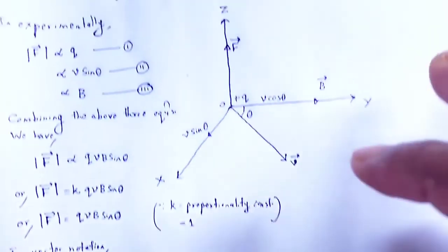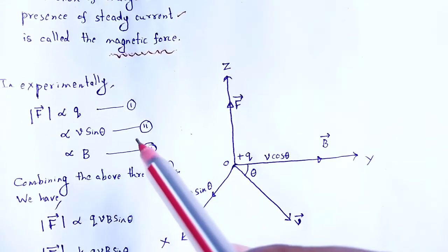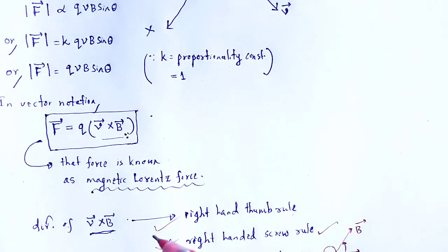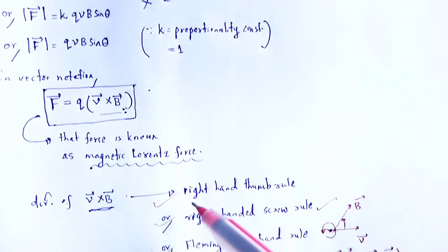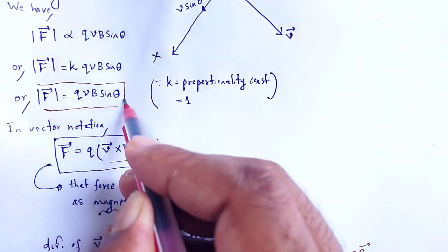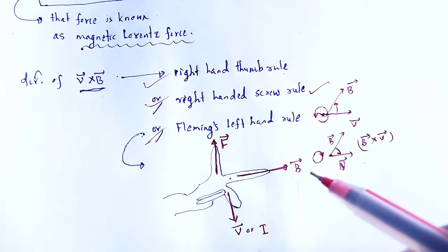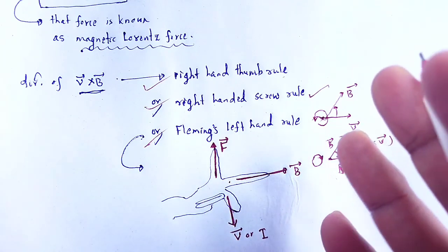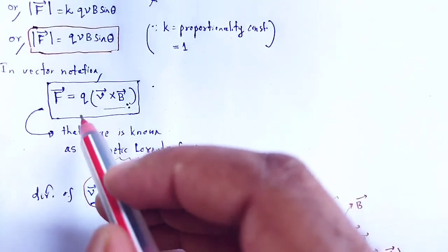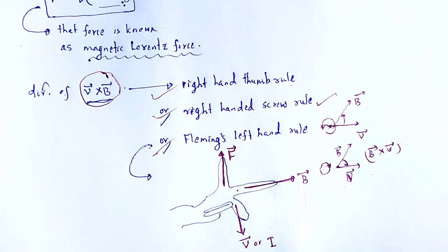So with the help of this video lecture, we understand what is magnetic force and the magnitude and direction of that magnetic force — F = qVB sin theta is the magnitude, and V cross B gives the direction. By using any one of these methods we can easily find out the direction of V cross B, the direction of the resultant magnetic force. Thank you.